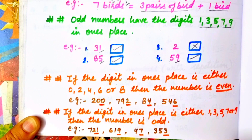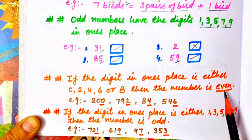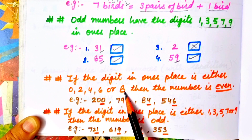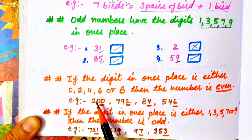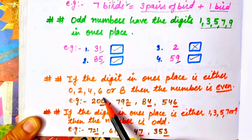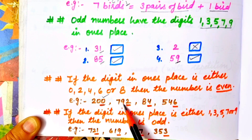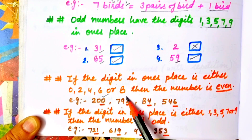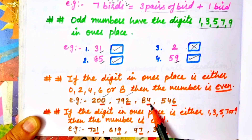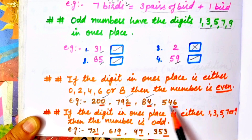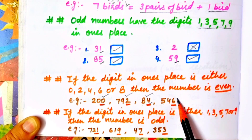We will understand some more examples. If the digit in the ones place is 0, 2, 4, 6, or 8, then the number is even. In 200, the ones place is 0 — so this is an even number. In 792, the ones place is 2 — so this is an even number. In 84, the ones place is 4 — even number. In 546, the ones place is 6 — so this is our even number.